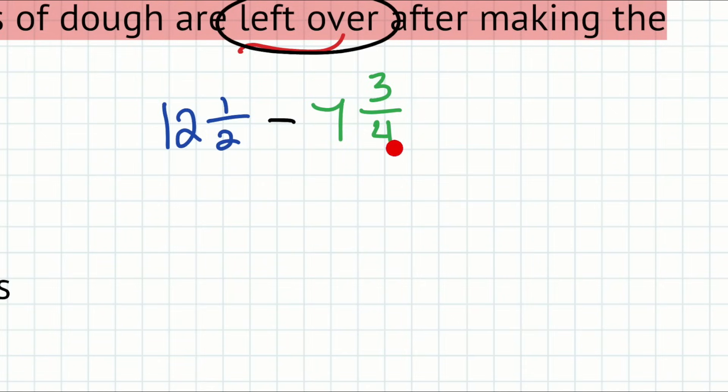So we need to have the same denominator. And also, I notice that we have mixed numbers. We have a whole number 12 and seven. So let's just go ahead and get the same denominator, then turn the fractions into improper fractions, and then subtract. So two and four, we can get the same denominator of four. If we multiply two by two, we can definitely get to four.